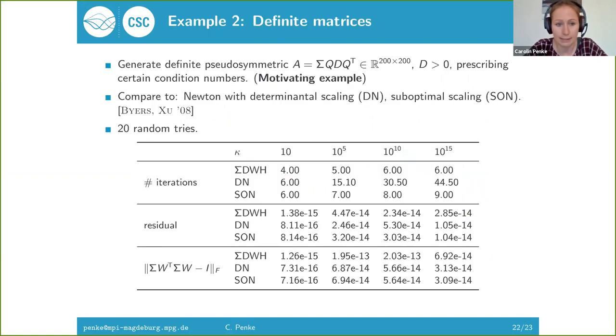Let's look at a second example. In our motivation, we have the additional property that the associated symmetric matrix was also positive definite. In this case, we can show that our iteration has the same convergence properties as in the standard case. We can also guarantee under very mild conditions that our iteration, which we called sigmaDWH, will converge in just six steps.